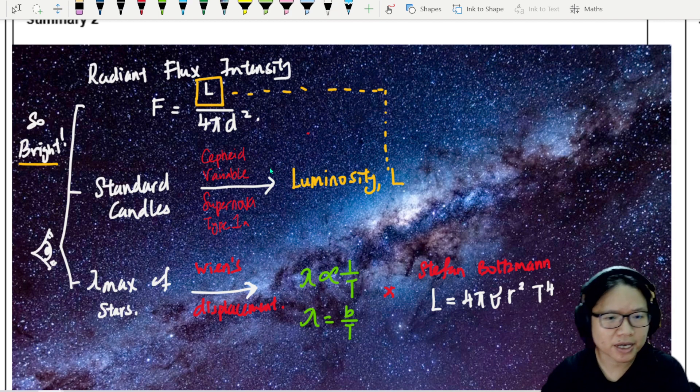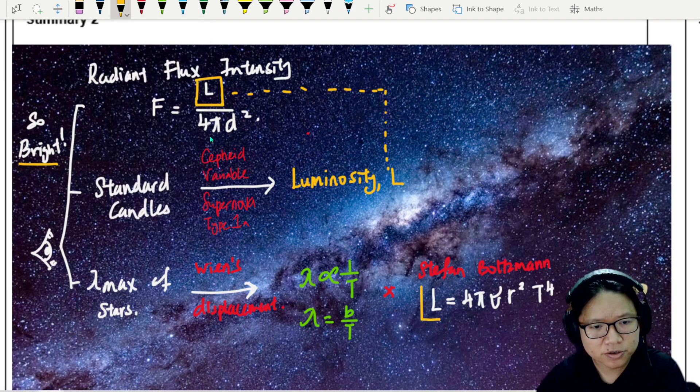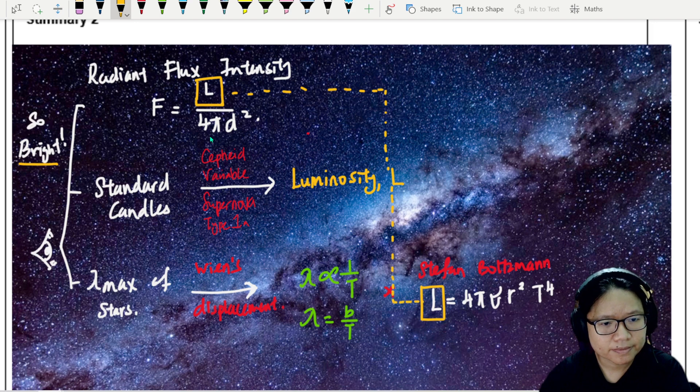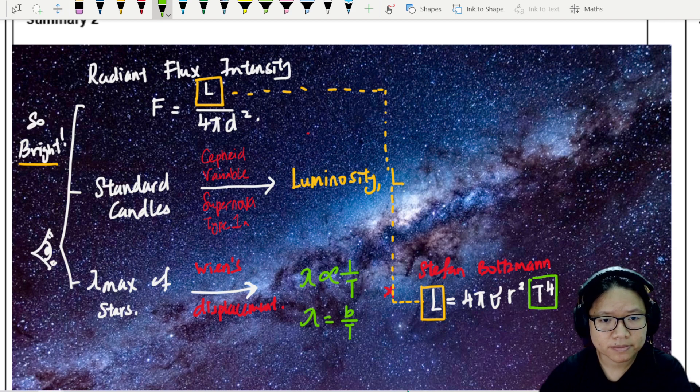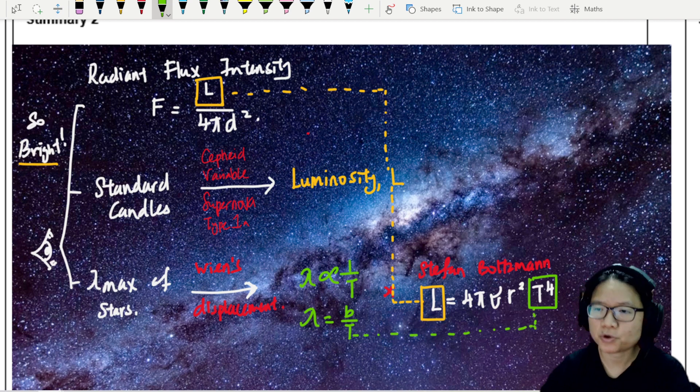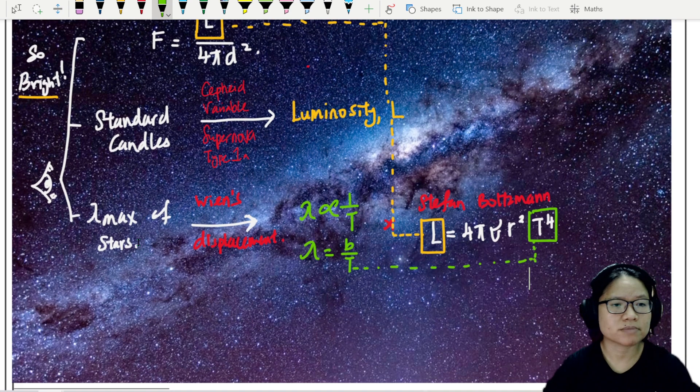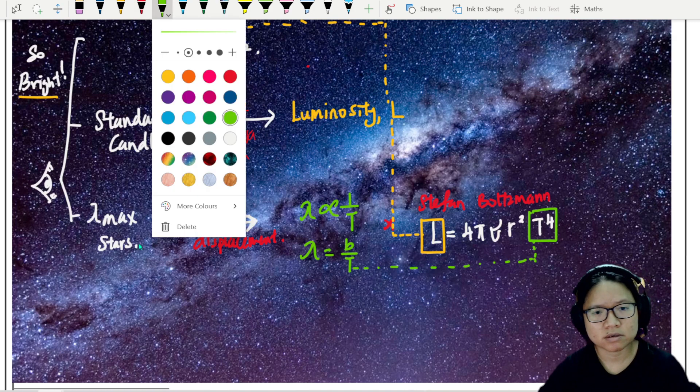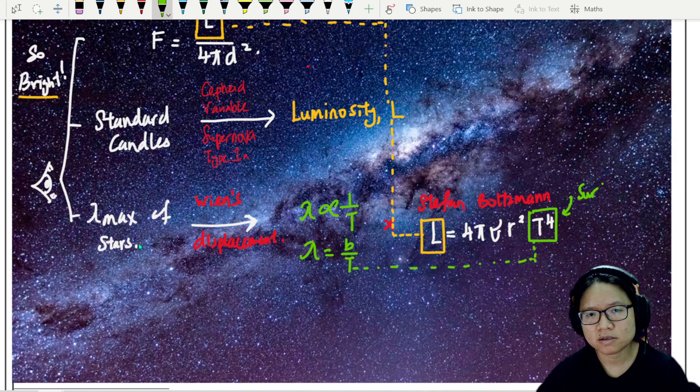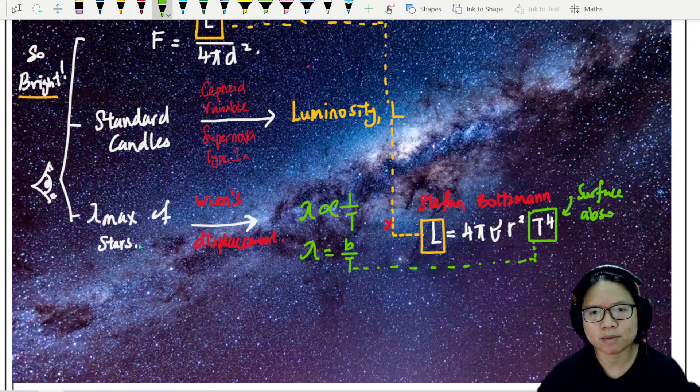And once again, our luminosity is making a guest appearance here. This is your L. And your t is here. So you definitely can find t using Wien's displacement law. After looking at the maximum lambda max of the star, and then this t here, by the way, this t is the surface absolute temperature.